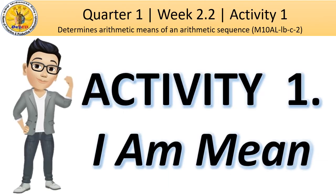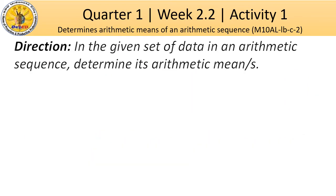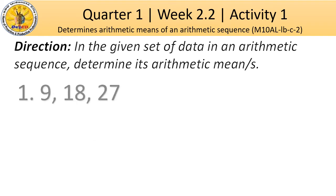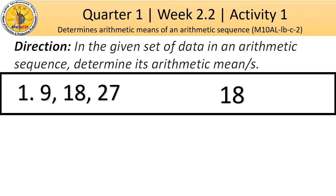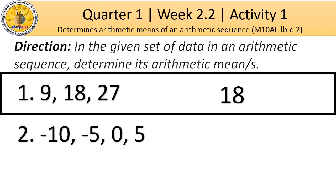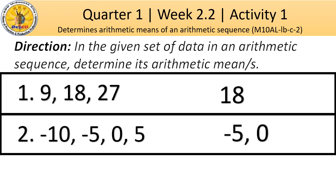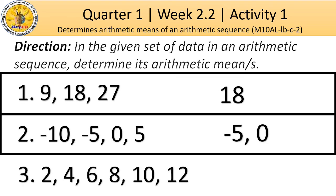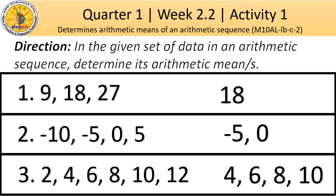Let's answer Activity 1: I am mean. Direction: in the given set of data in an arithmetic sequence, determine its arithmetic means. Number 1: the arithmetic mean is 18, between 9 and 27. Number 2: the arithmetic means are negative 5 and 0, between negative 10 and 5. Number 3: 4, 6, 8, and 10 are the arithmetic means because they are between the two extreme terms 2 and 12.